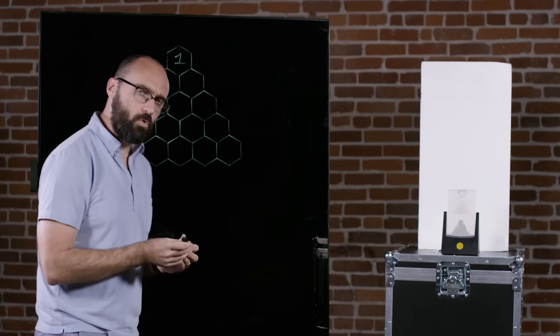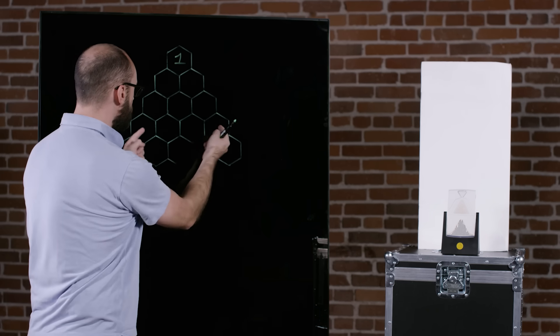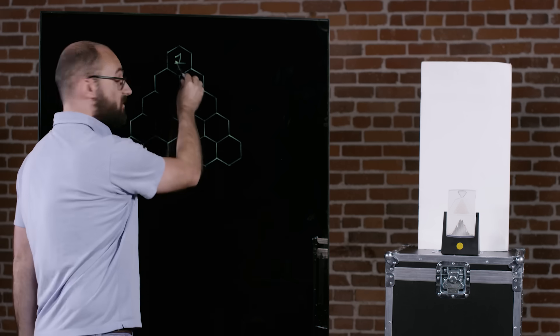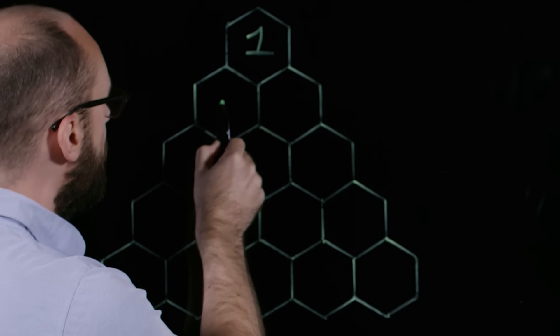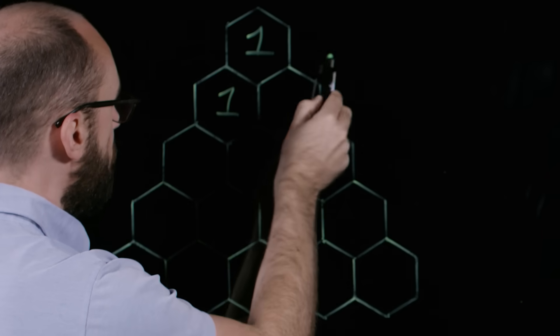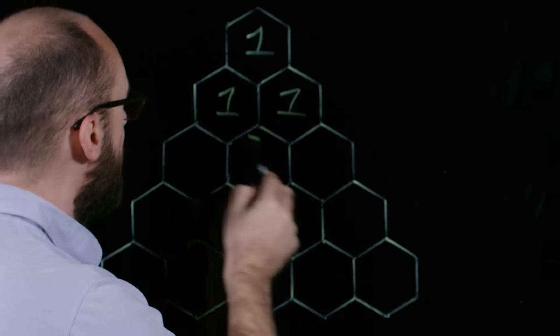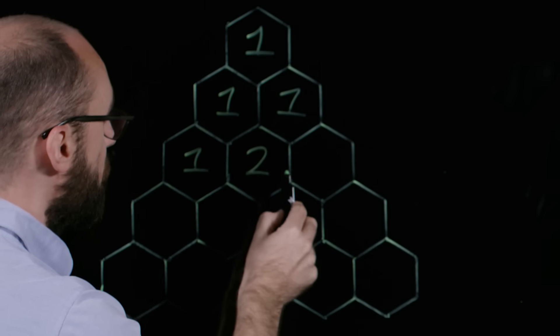Now, the rule for filling in the rest is that you take each spot and you sum the two numbers that are above and to the left and above and to the right. So for this cell, we have nothing plus 1, which is 1. And for this one, we have nothing plus 1, which is 1. Now down here we have nothing plus 1, which is 1. But here we have 1 plus 1, which is 2.